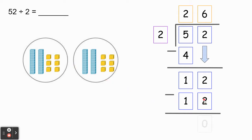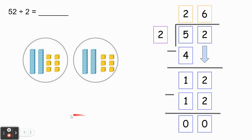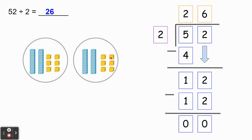Two minus two is zero, one minus one is zero. So this shows that there are no unit cubes left over to share — there's nothing left over, so we're done dividing. Our answer or quotient is 26. That means each group is getting a total of 26 base 10 blocks: two tens and six ones.